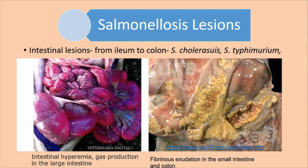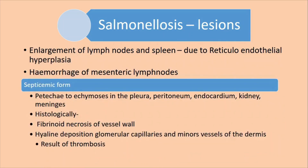In the enteric form, the main lesion we can find is in the large intestine. This photo is from pigs — Salmonella choleraesuis and Salmonella typhimurium. You can see on the left side there is severe hyperemia and gas production of the large intestine. When you open the mucosa, you can see necrosis and yellow diphtheritic plaque formation in the colon or large intestine or in the ileum. Other than the intestinal lesions, we can find mesenteric lymph nodes are enlarged and spleen is enlarged because of proliferation of reticuloendothelial cells. There will be hemorrhage in the mesenteric lymph nodes.